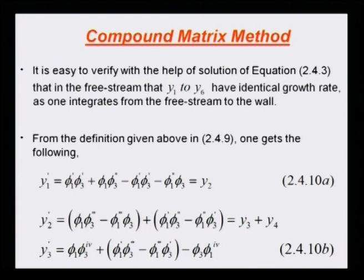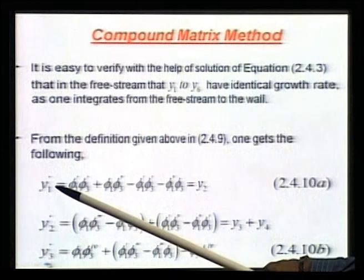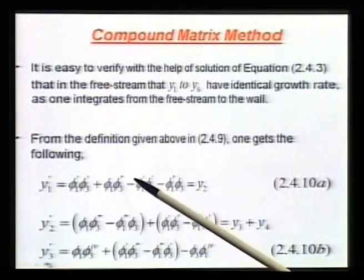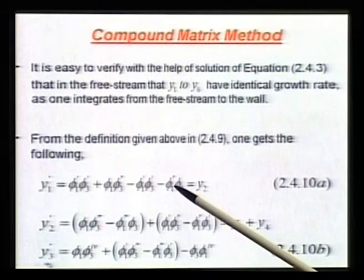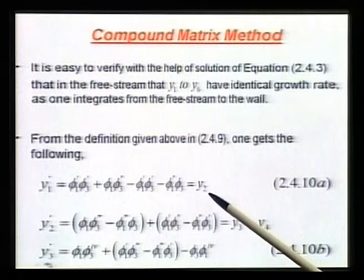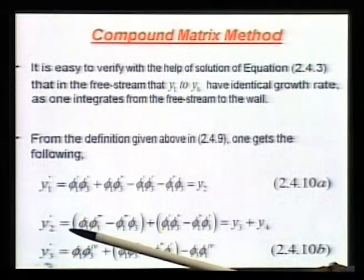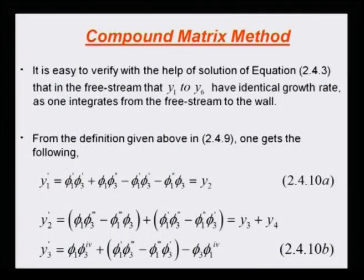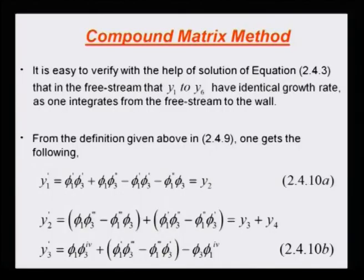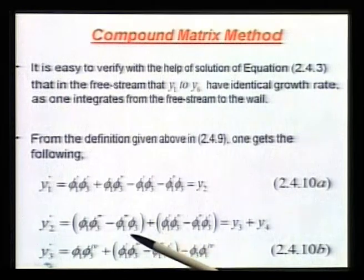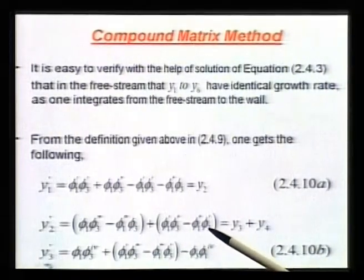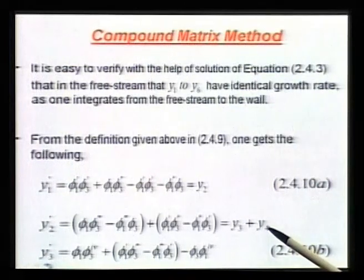By utilizing the definition of the variable itself, differentiating y_1 with respect to y: y_1_prime equals phi_1_prime * phi_3_prime + phi_1 * phi_3_double_prime minus phi_1_prime * phi_3_prime minus phi_1_double_prime * phi_3. The two middle terms cancel, and this is nothing but the definition of y_2. So one equation immediately obtained is y_1_prime = y_2. Going through the same exercise for y_2, differentiating once gives terms involving phi_1 * phi_3_triple_prime minus phi_1_triple_prime * phi_3, which is y_3, and phi_1_prime * phi_3_double_prime minus phi_1_double_prime * phi_3_prime, which is y_4.